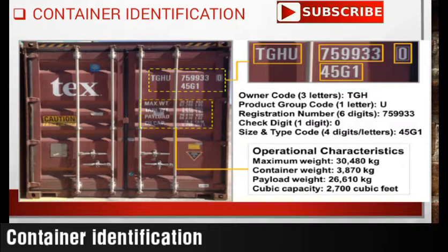Under the other operational characteristics number, we can see the maximum weight, container weight, payload weight, and cubic capacity. The maximum weight is the weight which the container can hold to its maximum capacity — it relates to cargo only, not the container itself. The container weight, which is the tare weight without any cargo, is 3,870 kg. If we fill the container with cargo, its total maximum weight will be 30,480 kg.